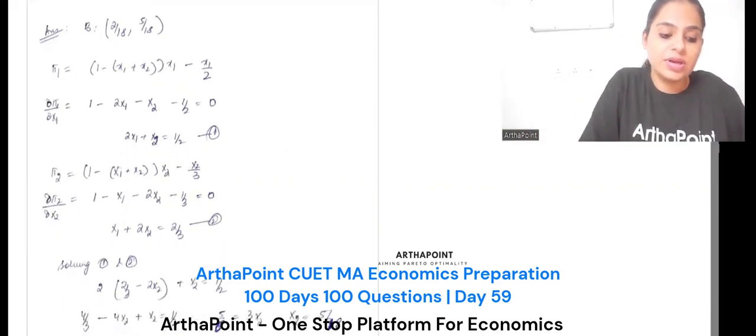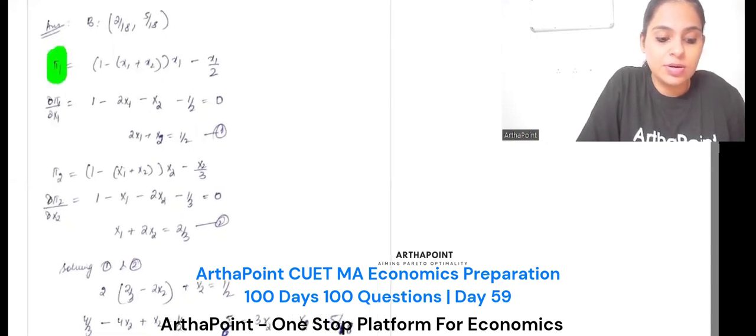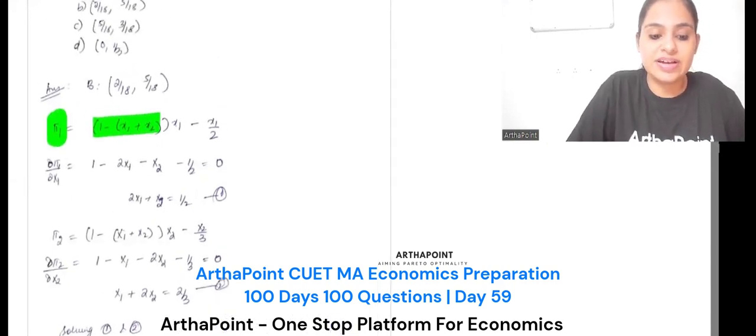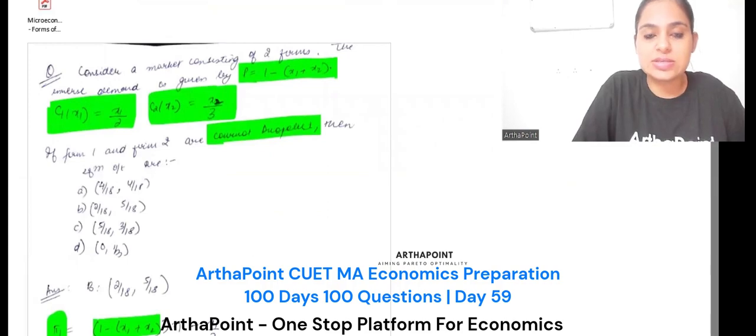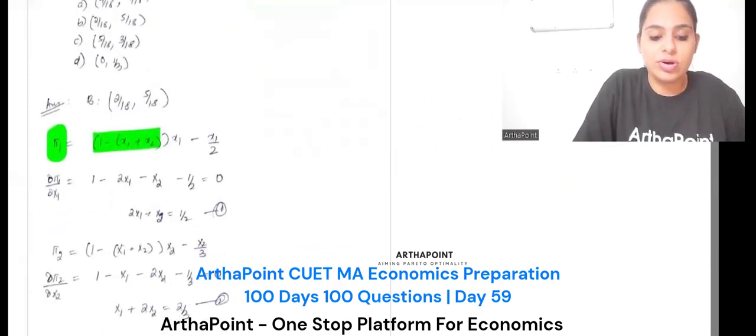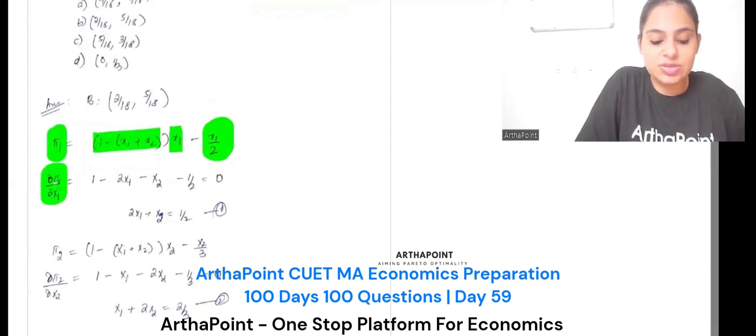Look here. This is the profit condition of firm 1. Price - price was given to me, 1 minus x1 plus x2 - into quantity, minus cost. Differentiate this with respect to x1, equate it to 0, and get the condition.